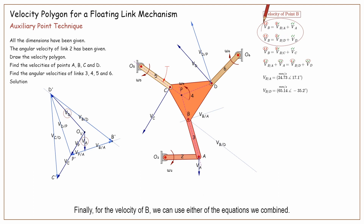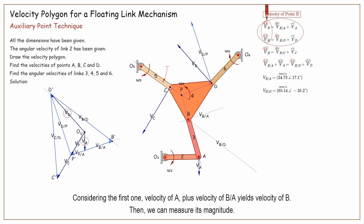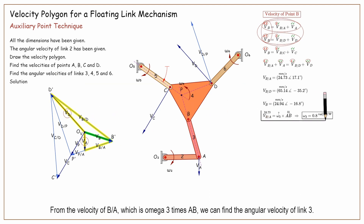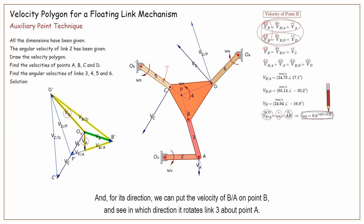Finally, for the velocity of B, we can use either of the equations we combined. Considering the first one, velocity of A plus velocity of B with respect to A yields velocity of B — then we can measure its magnitude. Likewise, from the second one, velocity of D plus velocity of B with respect to D also results in velocity of B. From the velocity of B with respect to A, which is omega 3 times AB, we can find the angular velocity of link 3. And for its direction, we can put the velocity of B with respect to A on point B and see in which direction it rotates link 3 about point A.